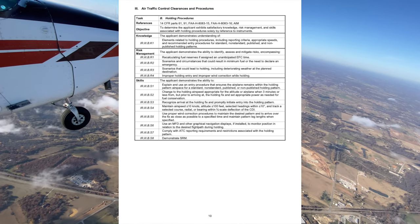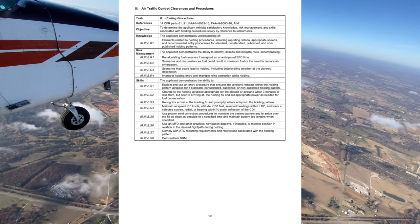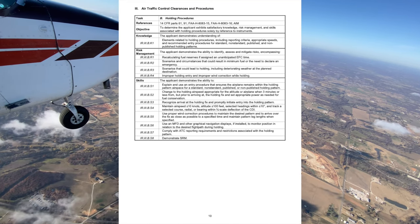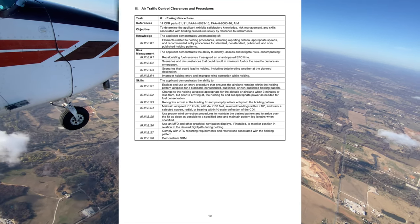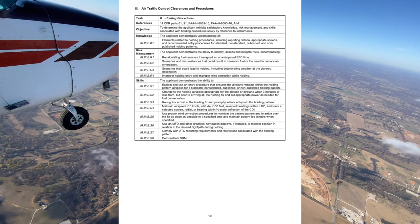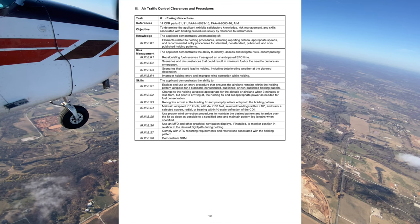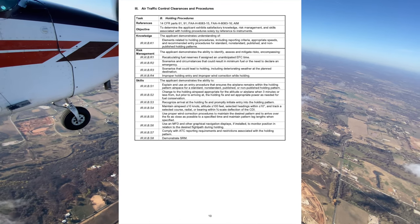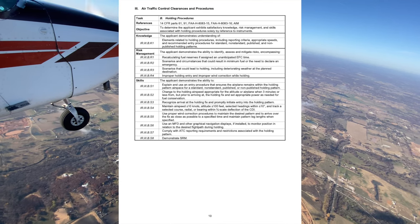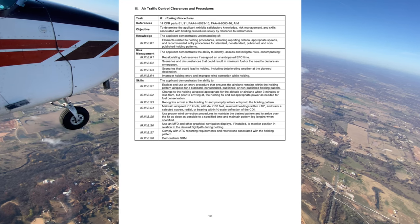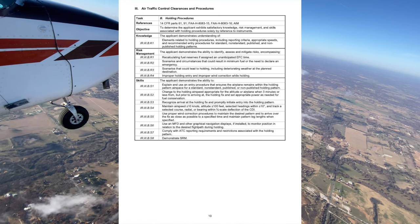For north and south turning errors, remember UNOS: undershoot north, overshoot south. For acceleration and deceleration errors, remember ANS: accelerate north, decelerate south — this only occurs on east and westerly headings. For standard rate turns at three degrees per second: a 360 takes two minutes, a 180 takes one minute, and 90 degrees takes 30 seconds.